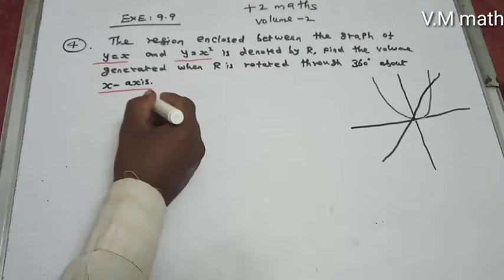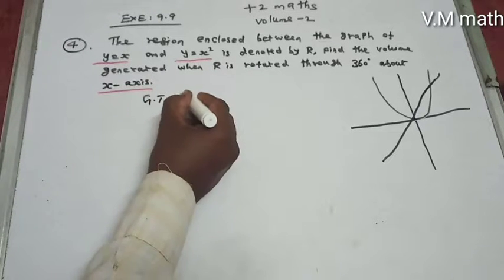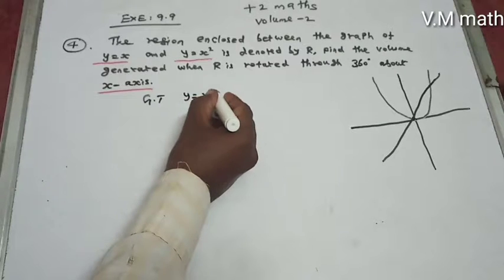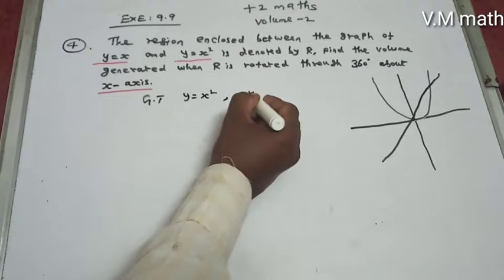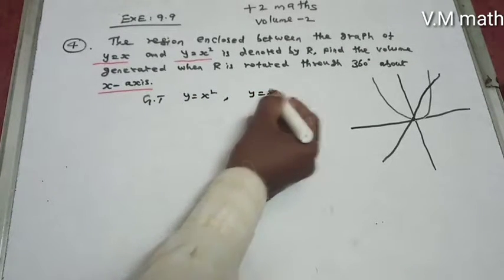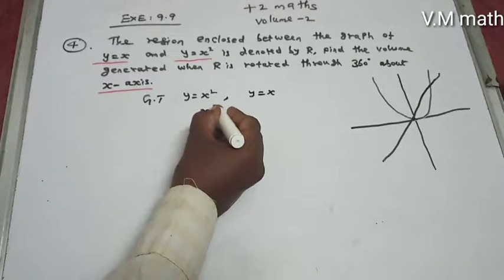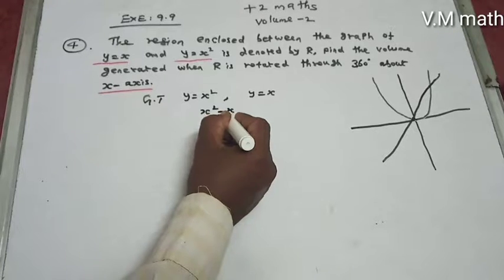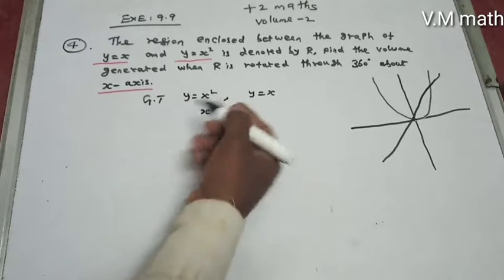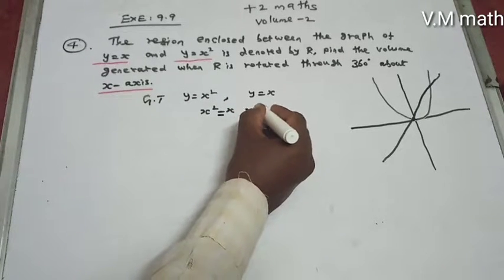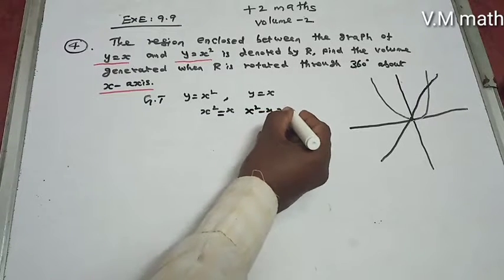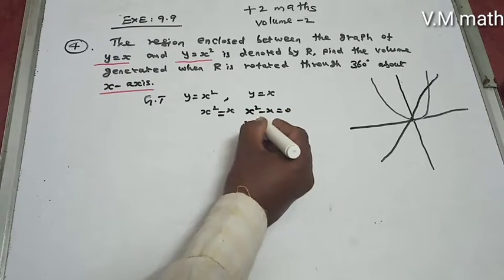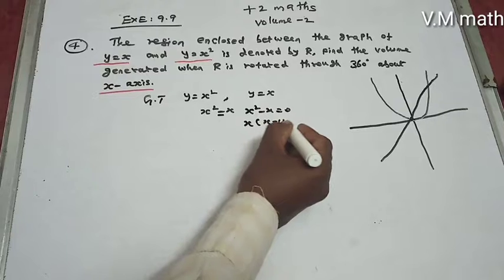Given that y equals x squared and y equals x, we set x squared equals x. From x squared minus x equals zero, we can find the intersection points. From x squared minus x equals zero, the x values are x equals zero or x equals one.